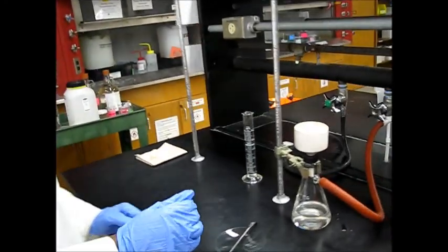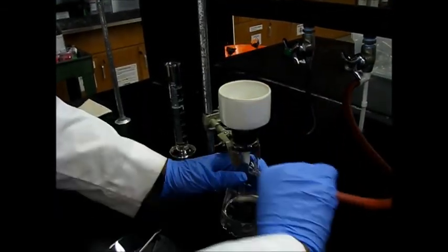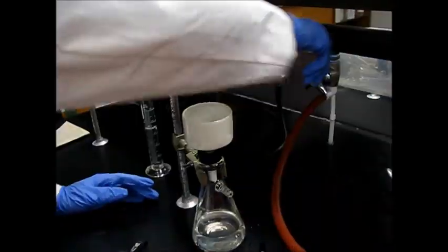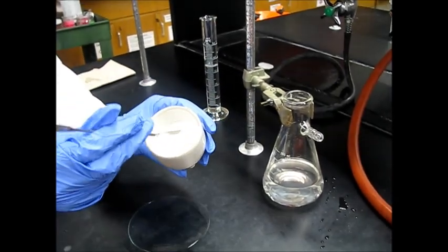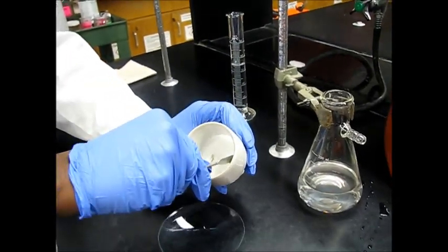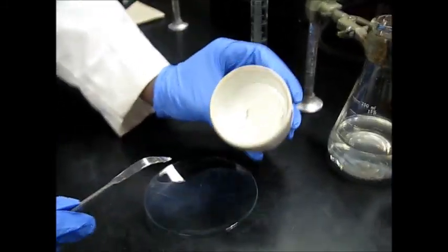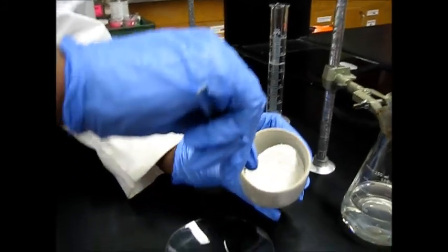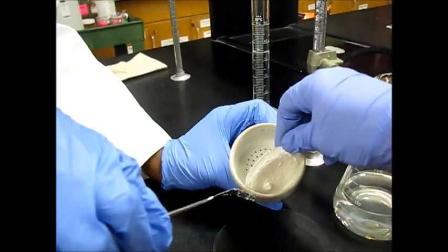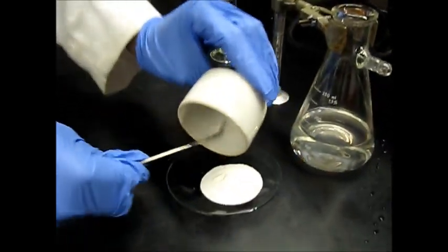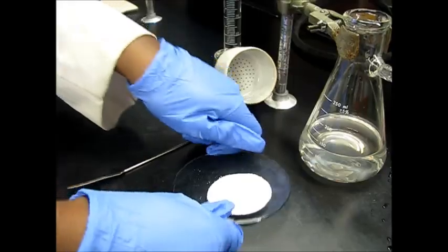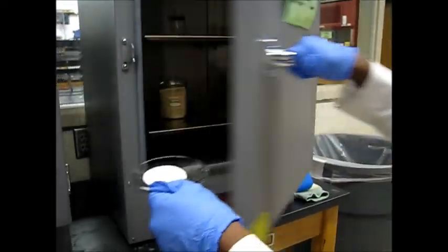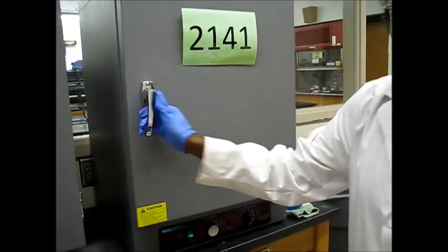So now we're going to stop our vacuum filtration. We're going to remove the hose. Now we're going to get our product. We're going to use our spatula. We're going to scrape around the edges and lift up the filter paper. Try to get all of our product. And then we'll oven dry. Now we're going to oven dry our product just for 10 minutes. And we'll come back in 10 minutes.